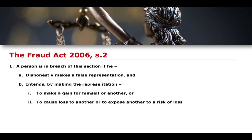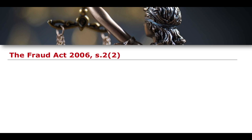To commit fraud by false representation you must first dishonestly make a false representation, and there must be an intent. Whereas theft is the dishonest appropriation of property with the intent to permanently deprive, fraud by false representation is the dishonest making of a false representation with the intent to gain or to cause another loss or risk of loss. You can see very clearly how similar theft and fraud are as offenses.